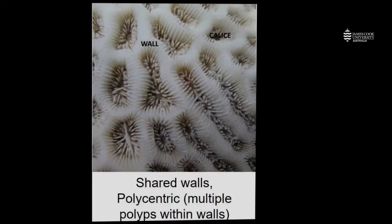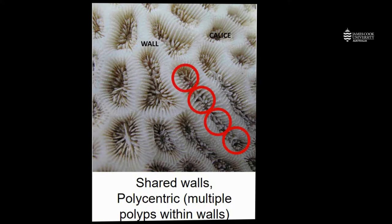Corals can also have shared walls that we call polycentric, which means there are multiple polyp mouths occurring within the same set of walls. You can see that in this example here. Each of these red circles indicates a different corallite or a separate polyp, and they are all lined up within this single set of corallite walls.